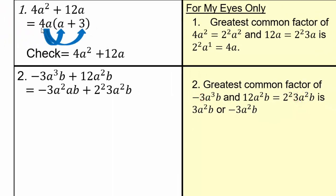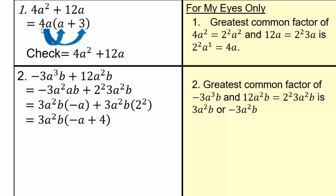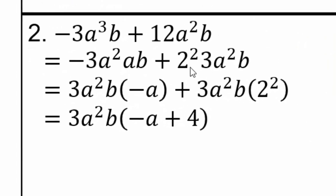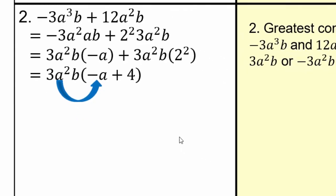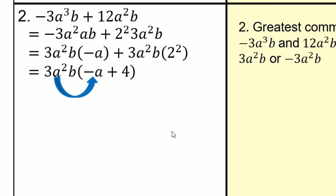It may help you to rewrite it so you can see how the greatest common factor appears in each term. You can see that's a 3a squared and a b, and 2 squared times 3a squared b. So 3a squared b we can pull out, and then there will be a negative from the first term and an a left over, and a 2 squared or 4 left over. Check: 3a squared b times negative a gives negative 3a cubed b, and 3a squared b times 4 gives positive 12a squared b. So it checks out — always make sure you check your answer.